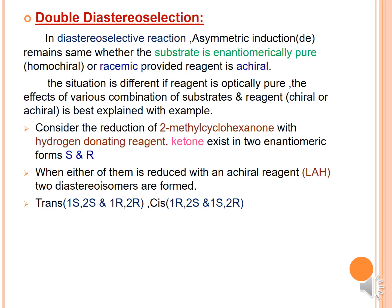Moving on to double diastereoselection: in the diastereoselective reaction, asymmetric induction — the diastereomeric excess (DE) — will remain the same whether the substrate is enantiomerically pure or has a racemic mixture, provided the reagent is achiral. However, if we take a situation where a different reagent is used which is optically pure, that will affect the combination of substrate as well as reagent, as explained in the example.